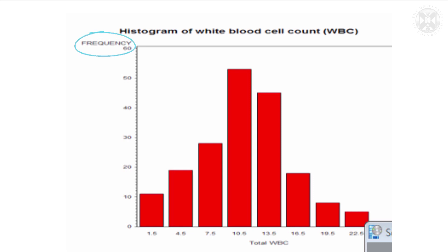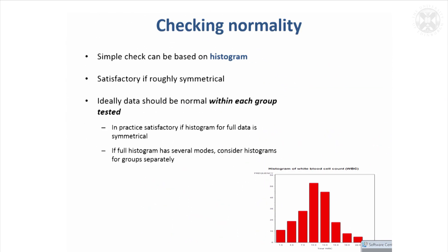This is white blood cell count showing how many values we've got at each point of the scale. Usually, if this is roughly symmetrical, that's good enough to assume the data are roughly normally distributed, and you can use parametric tests. What's actually assumed is that the data within each group are normally distributed.